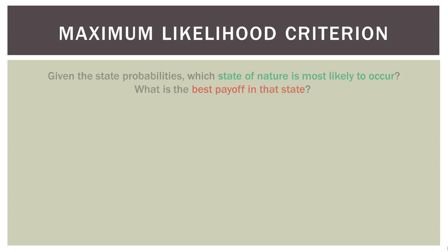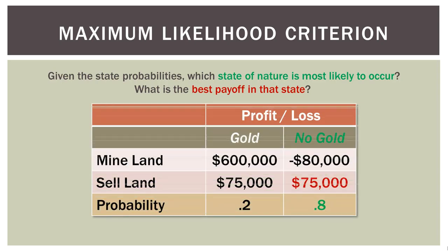Now the Maximum Likelihood Criterion does involve probabilities. Given the state probabilities, which state of nature is most likely to occur, and what is the best payoff in that state? Looking at our probabilities, the most likely state is no gold (probability 0.8). The best payoff in that state is $75,000 from selling the land — certainly not losing $80,000. So under the Maximum Likelihood Criterion, we would choose to sell the land.